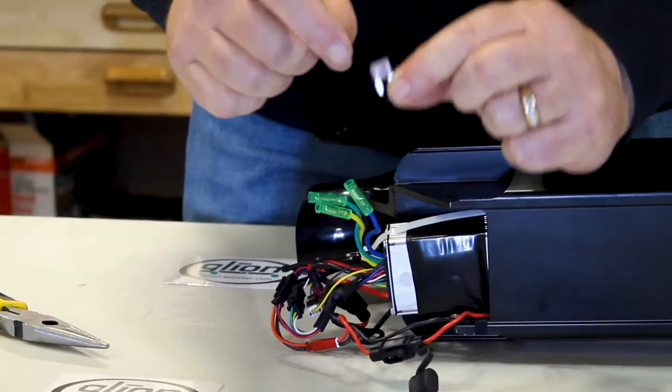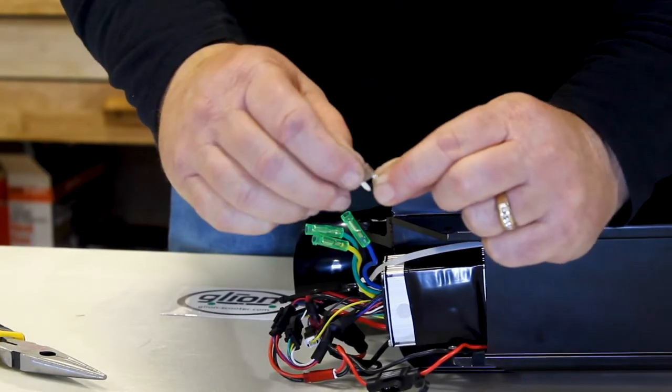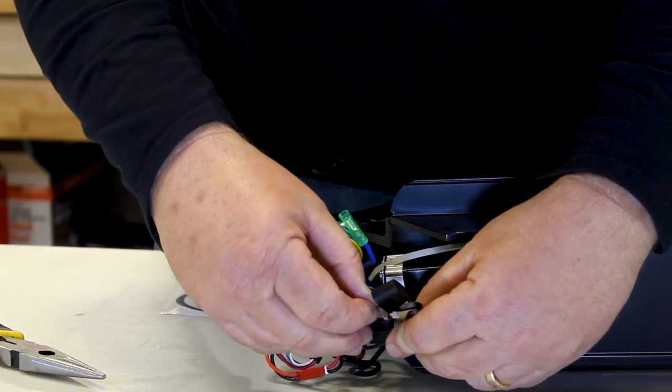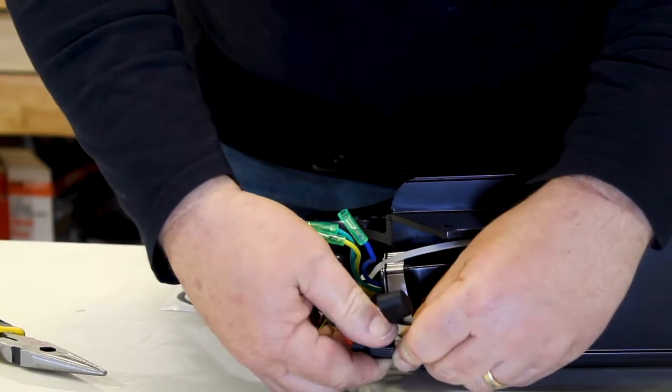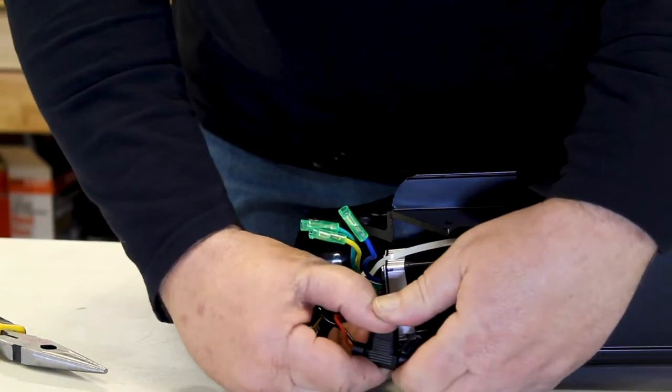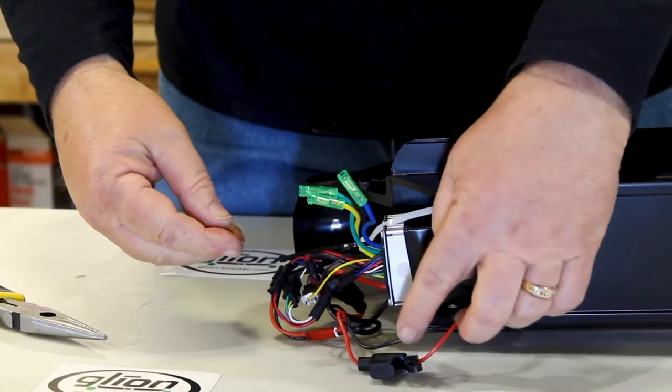After we get the fuse out, we can look at it to make sure that the link is not burnt. We want to make sure and put the cap back on so it's good and tight. That was the 5-amp fuse.